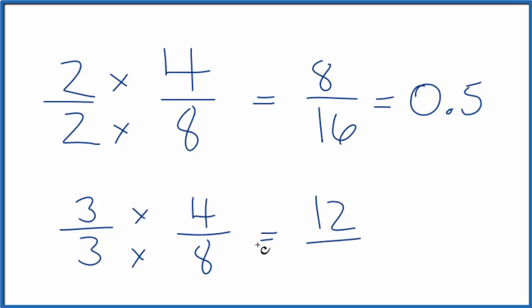3 times 4 is 12 here. 3 times 8 is 24. We get another equivalent fraction for 4 8ths. And it's equal to 0.5.